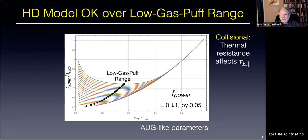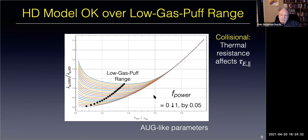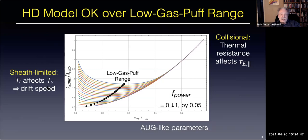How well does the generalized HD model do? On the far right, the collisional effect—thermal resistance affecting tau-parallel—becomes significant above NSEP/N-Greenwald ≈ 0.6. Down at low density there's a strong sheath-limited effect where target temperature affects upstream temperature. Multiplying the drift speed times tau gives the model. Multiplying these together gives the increase in drift speed compared to sound speed, and you get the increase in tau-parallel. The thermal resistance affects tau-parallel; there's a temperature drop along the field line.